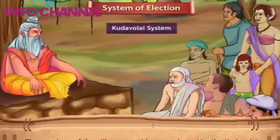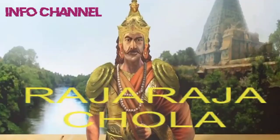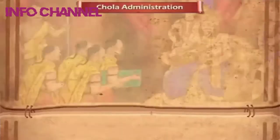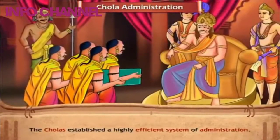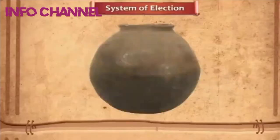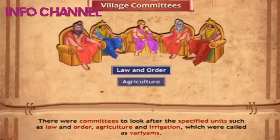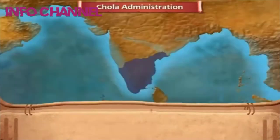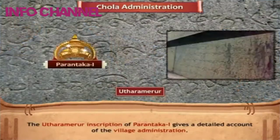During the Chola rule, the Kudavolai system was first introduced by Rajaraja Chola. In that system, the village administrative officers of various levels were elected. They had successfully carried out the welfare schemes. This has been clearly stated in the Uthira Meroor inscription.